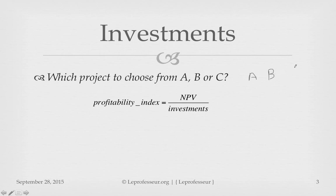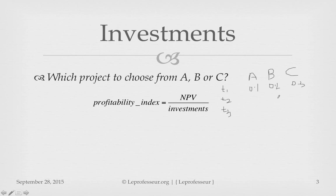For example, across projects A, B, and C, you calculate the profitability index for each time period. In time period T1 the profitability index might be 0.1, 0.2, and 0.3 for projects A, B, and C respectively. For another period, these might change — say 0.2, 0.1, and 0.5. The values shift across time periods, giving you a richer picture of each project's return profile.